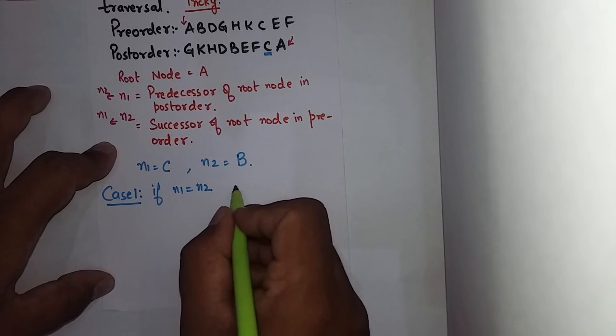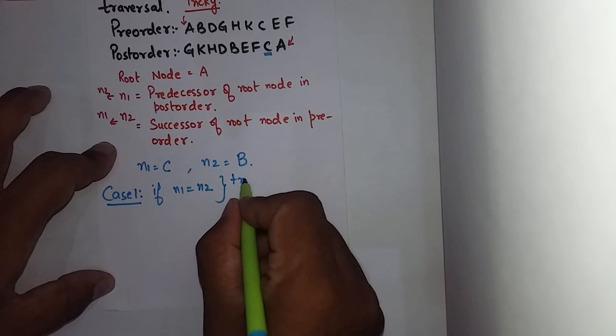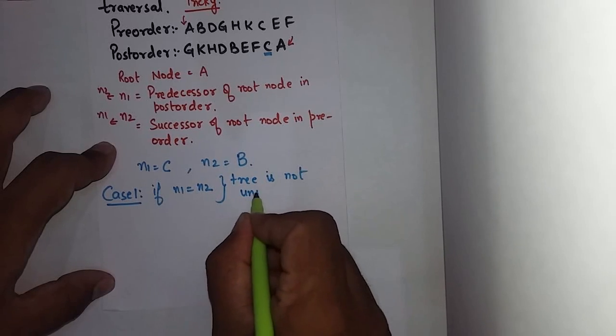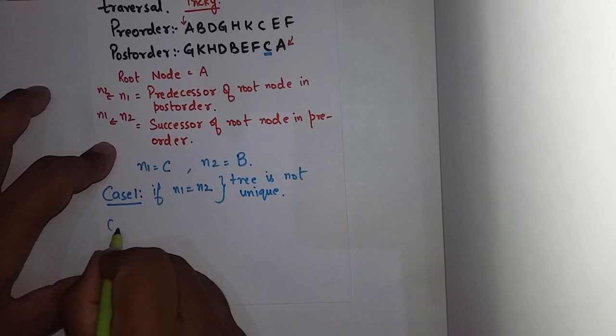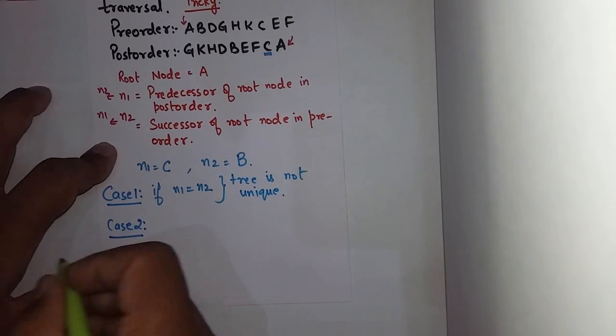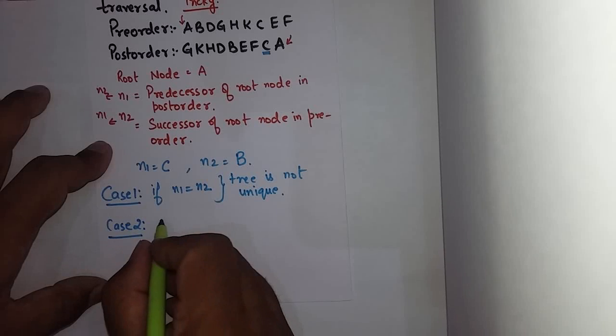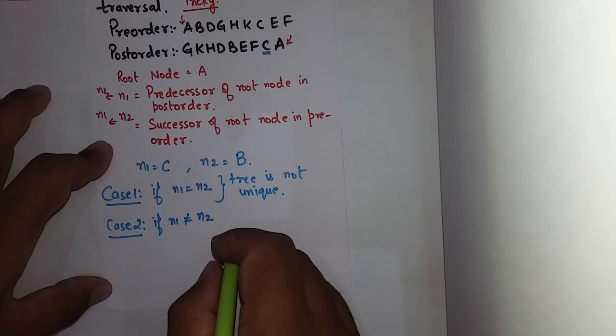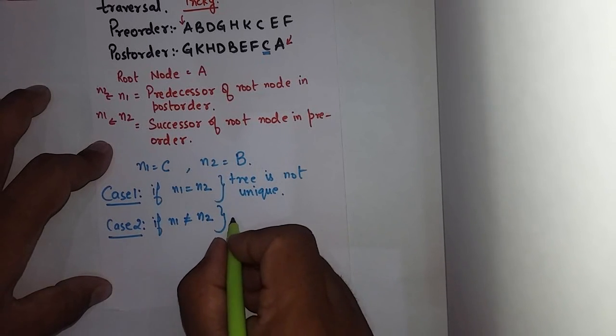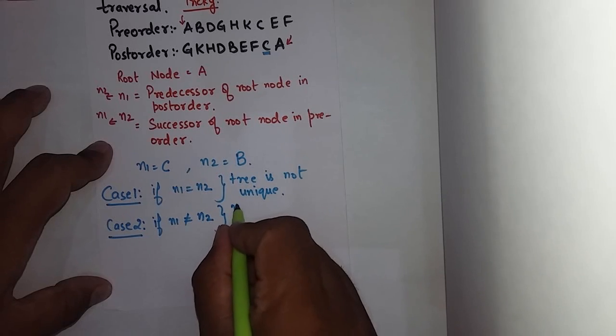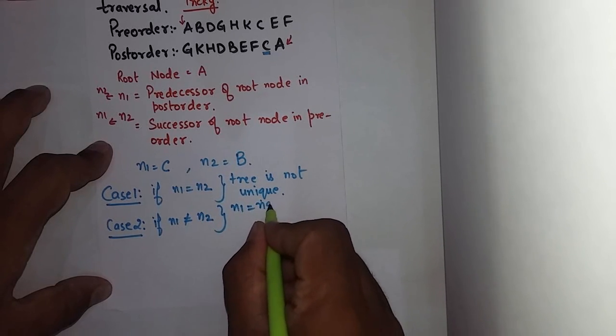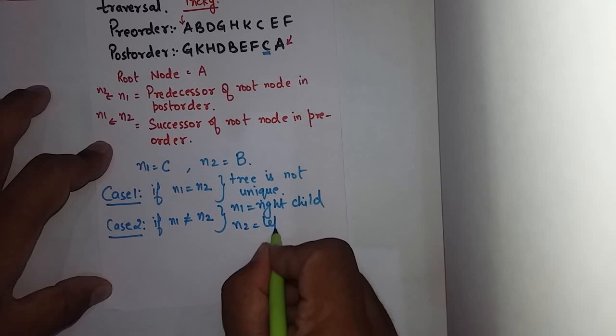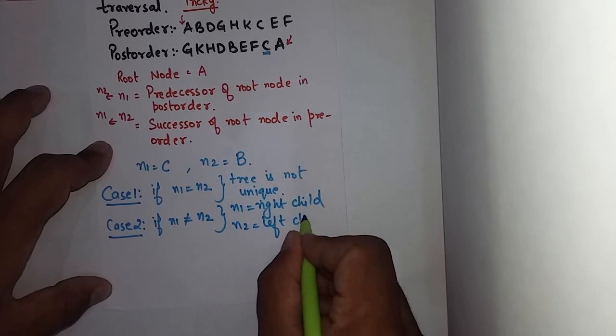then this node is considered to be the left or right child of the root node, in which the construction of tree is not unique, and N2 is considered to be left child.